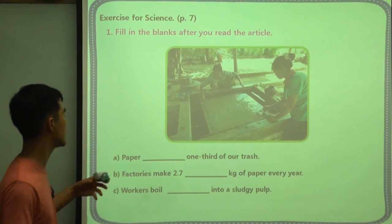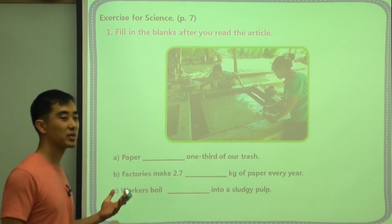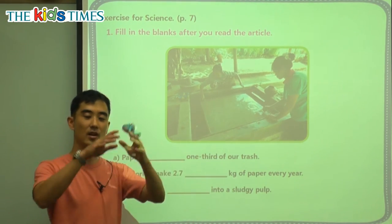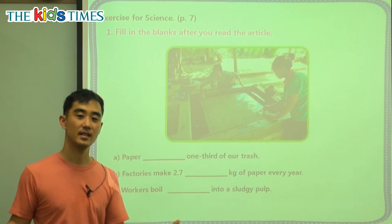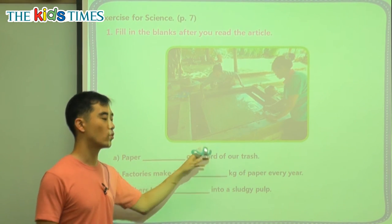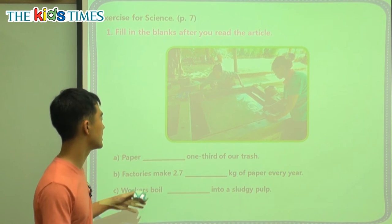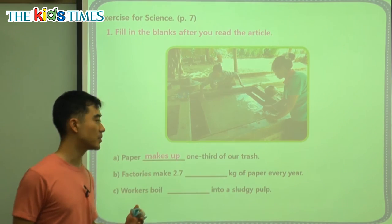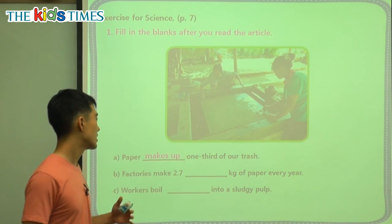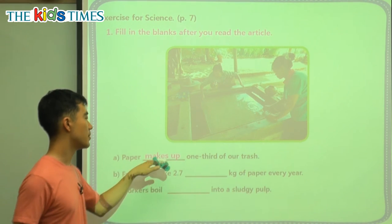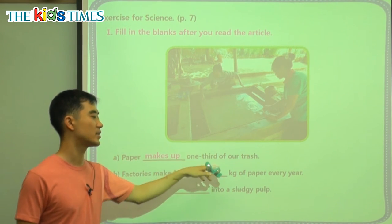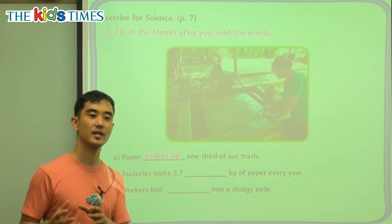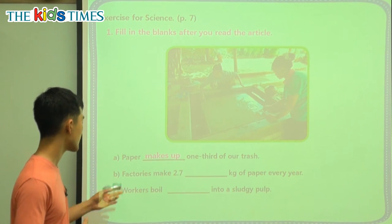We have three review questions. A: Paper blank one third of our trash. We talked about all the garbage — food, paper, wood, plastics — and 33%, or one third, is from paper. We can say water makes up two thirds of our Earth, so 'make up' means how much of something there is. B: Factories make 2.7 blank kilograms of paper every year — the word with nine zeros.